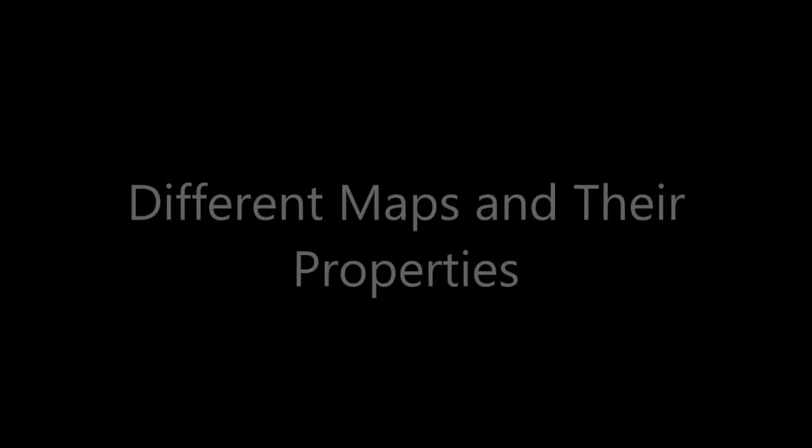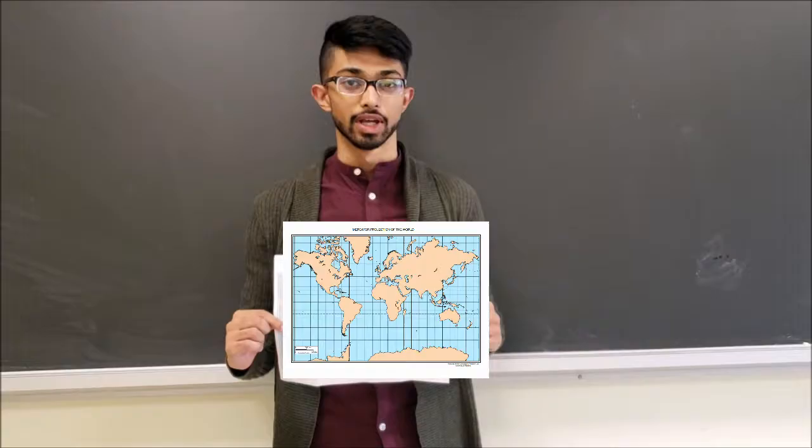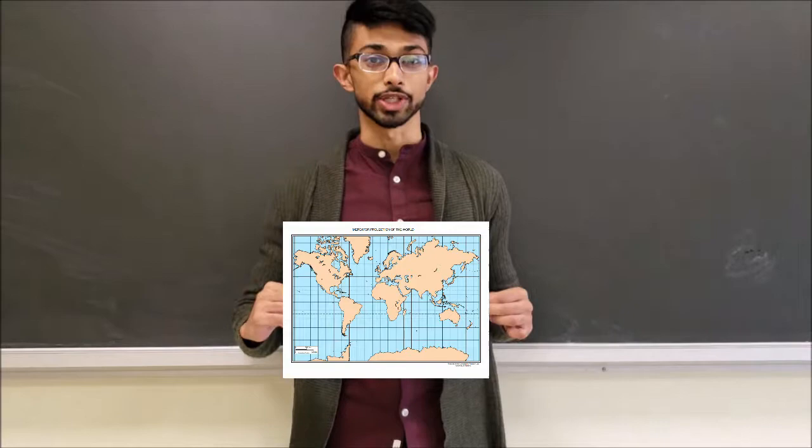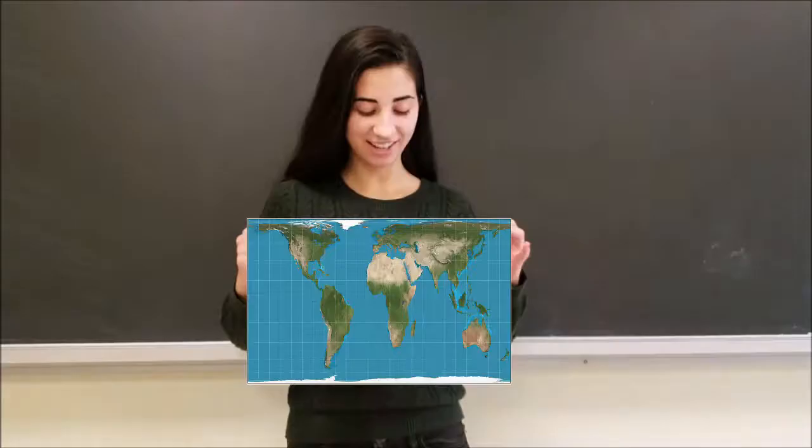As the interview showed, different maps can convey different meanings. Here are some map projections and the properties of Earth they represent. This is the Mercator projection. It preserves angles between coastlines, which is great for navigation, but it distorts land area, so it's off for comparing how one landmass compares to another.